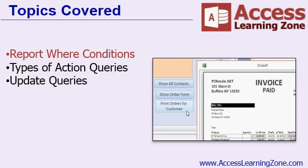Today's class focuses primarily on action queries and update queries specifically. But we'll begin by learning about report where conditions. This is where you can open a report and specify conditions in the button that opens the report, so you can show a single record, multiple records, records between two dates, and so on. We'll see a couple of different examples today.